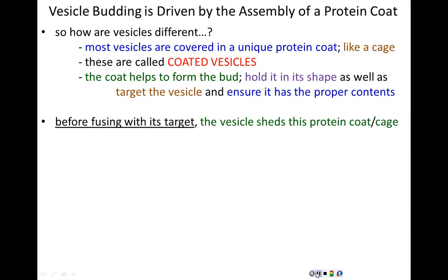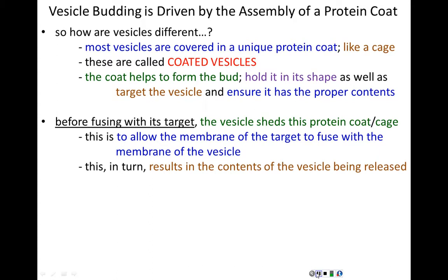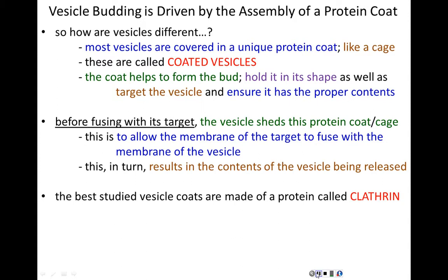Once the vesicle reaches its proper target, this protein coat is shed, exposing the membrane. This allows the membrane of the vesicle to touch and fuse with the membrane of the target organelle, and once that fusion occurs, the contents — the cargo of the vesicle — are released into its destination.